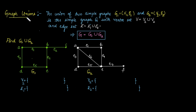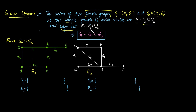Next is graph union. The union of two simple graphs G1 and G2 is a simple graph G, where G is the union of G1 and G2.